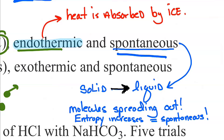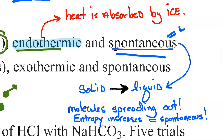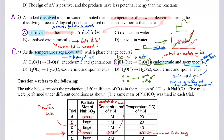Spontaneity is basically saying entropy — this idea of things spreading out, energy spreading out, becoming more random. Entropy is increasing; it's a measure of that randomness spreading out. That's what spontaneous means. That's why C is the answer.